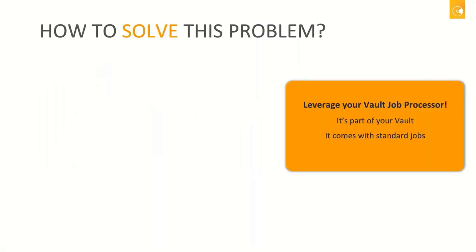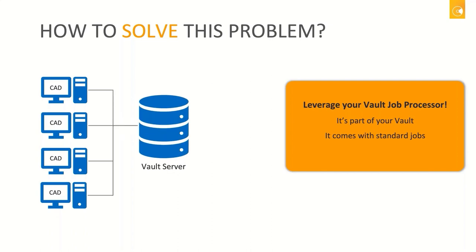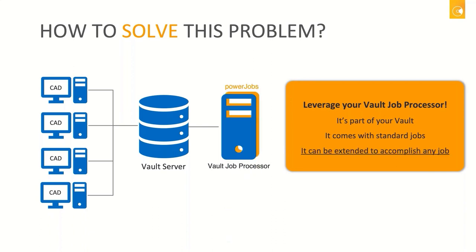So how do you solve this problem? If you're already running Vault Workgroup or Vault Professional, you've partially already solved the problem, because with Vault you also get the Vault Job Processor — it's part of your Vault. It comes with standard jobs but it can do even more. With a list of CAD clients running AutoCAD or Inventor with a Vault license, all these clients are connected to the Vault server. The Vault Job Processor runs on a dedicated machine, comes with some pre-configured jobs, but more importantly it can be extended to accomplish any type of job. This is where PowerJobs comes into play, and to see how this works I'd like to hand over to Christian.